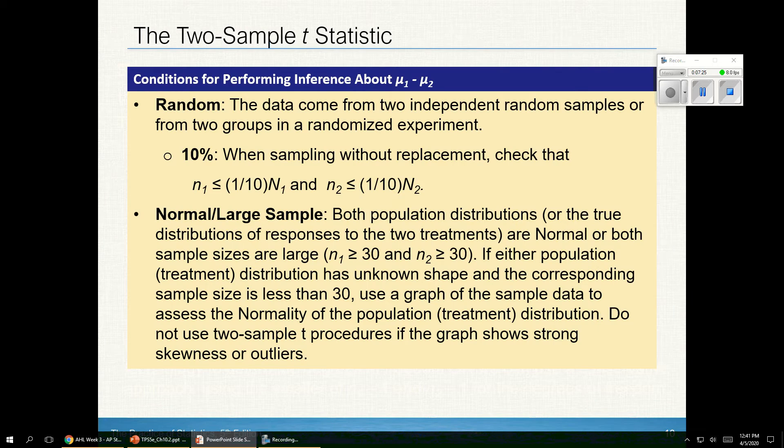Here's the listing of the conditions again for the t-distribution. We've got the 10% rule we need to check. We need independent random samples. And if I have large sample sizes or I know the populations are normal, I'm good. Otherwise, we revert back to the small, medium, and large ideas that we had before. And we're concerned, of course, if there's some strong skewness or strong outliers in my samples.